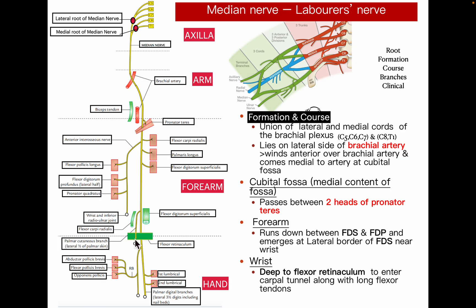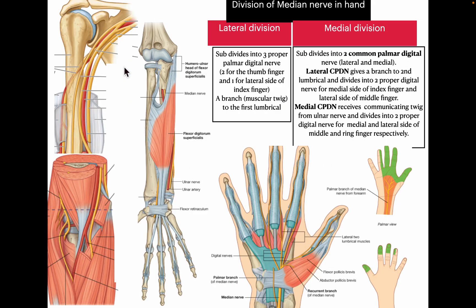Before entering the carpal tunnel, the median nerve gives a palmar cutaneous branch supplying the skin of the thenar area. After passing deep to the flexor retinaculum, it gives branches to the thenar muscles — abductor pollicis brevis, flexor pollicis brevis, and opponens pollicis — as well as the first and second lumbricals. It then gives palmar digital branches supplying the lateral three and a half digits, including the nail beds.